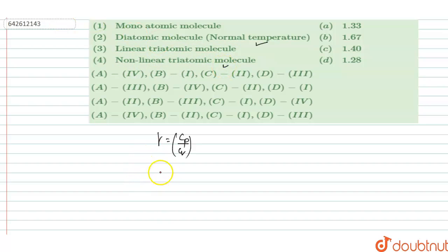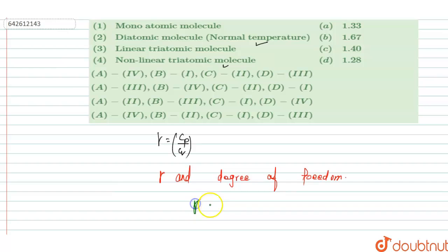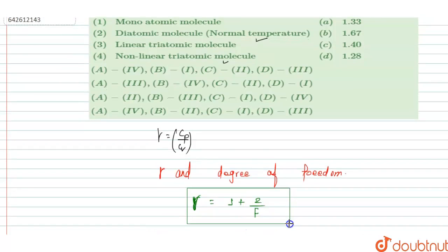For solving this question, we should first know the relation between gamma and degree of freedom. The relation is: gamma is equal to one plus two by f, where f is the degree of freedom. This is the key relation: γ = 1 + 2/f.